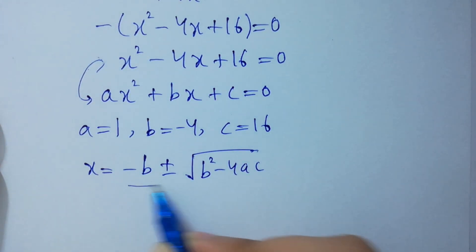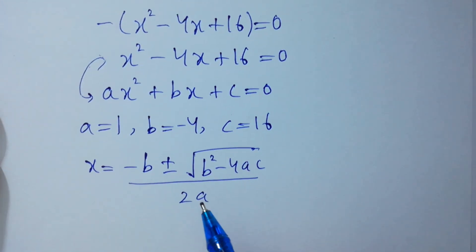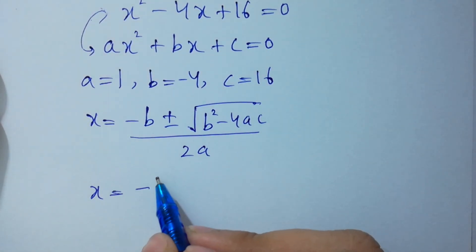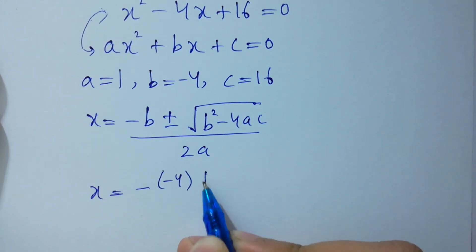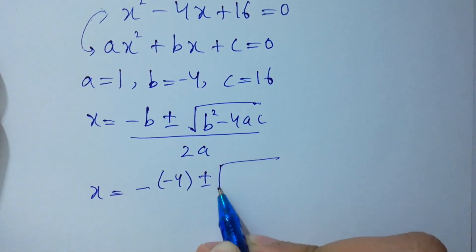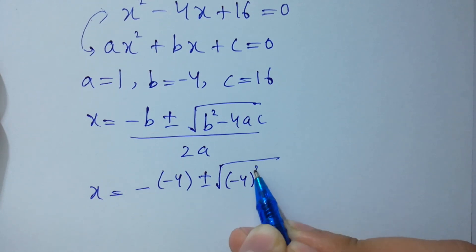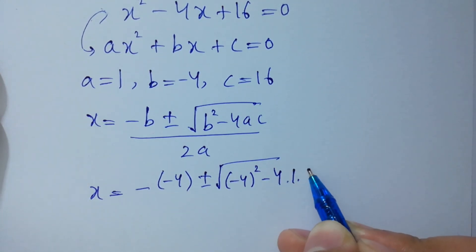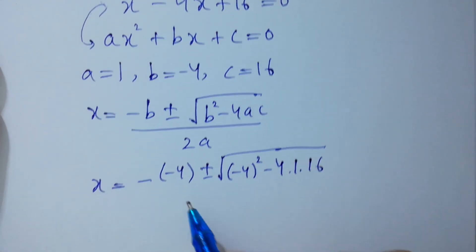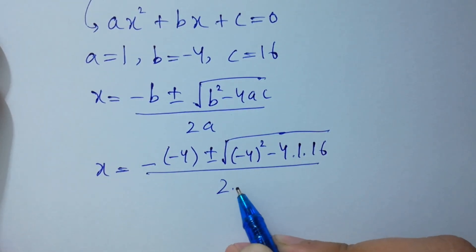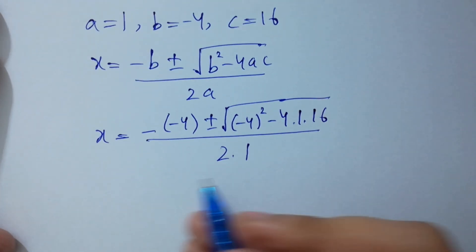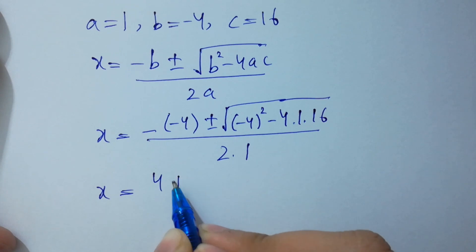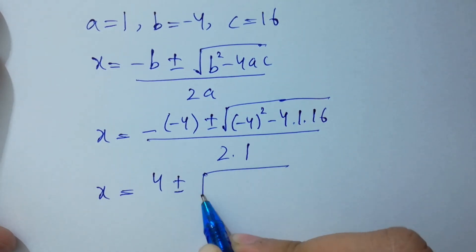Apply the quadratic formula: x equal to minus b plus or minus square root of b squared minus 4ac, over 2a. Substituting: x equal to minus of minus 4, plus or minus square root of (minus 4) squared minus 4 times 1 times 16, over 2 times 1.